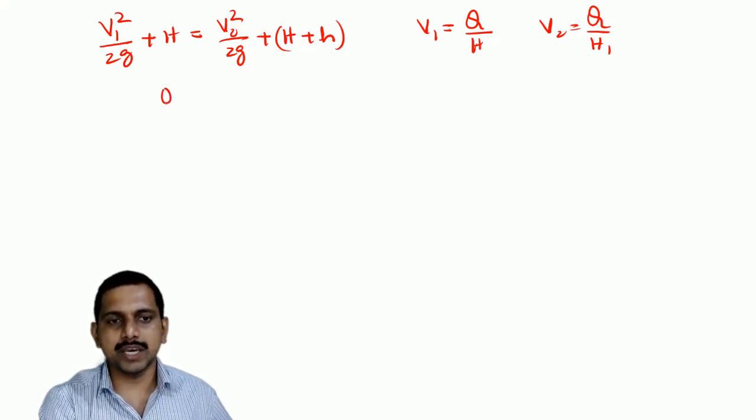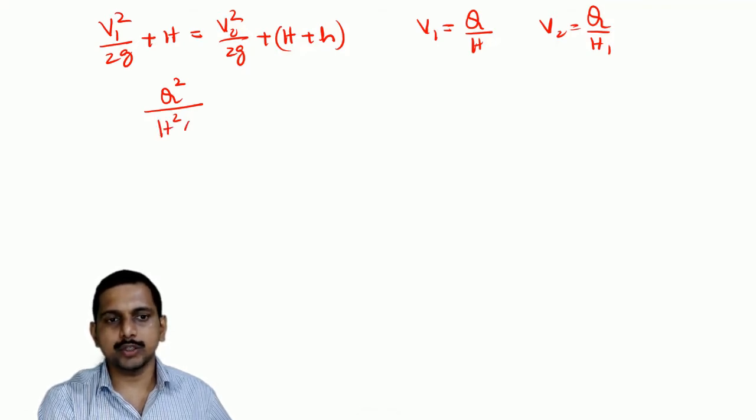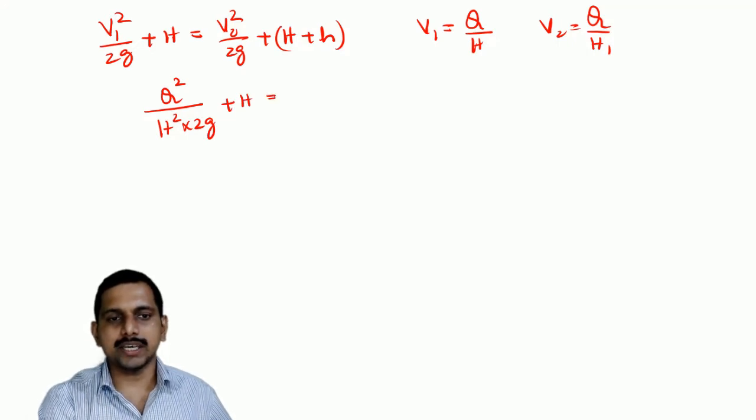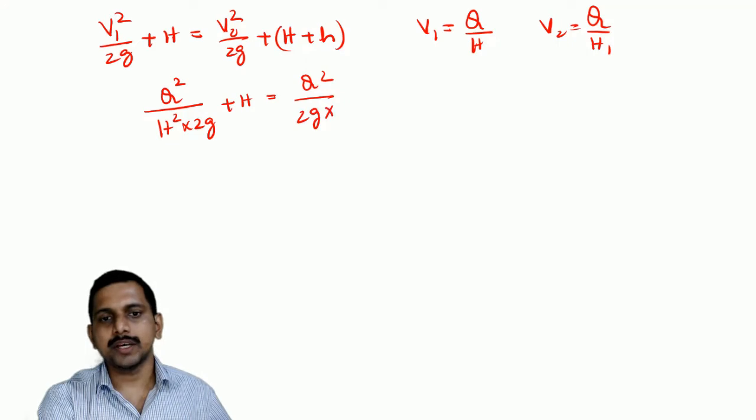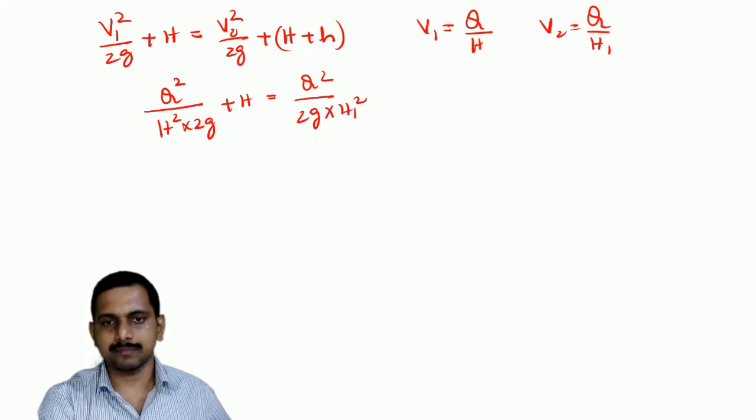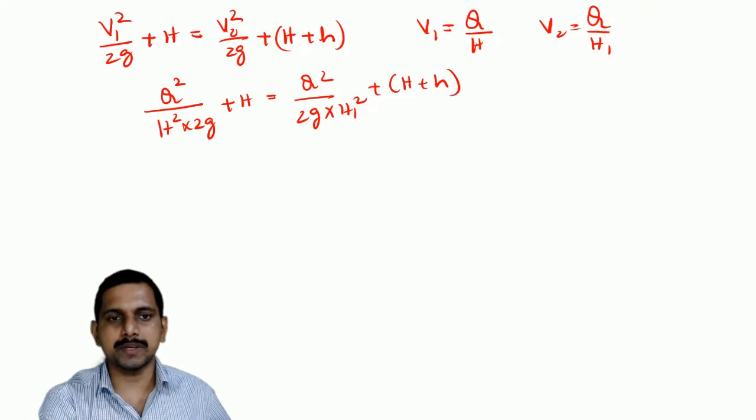So, V1 square, when you say, you will get Q square by h square, Q square by h square into 2g plus capital H is equal to Q square by 2g into h1 square plus h1 plus h.